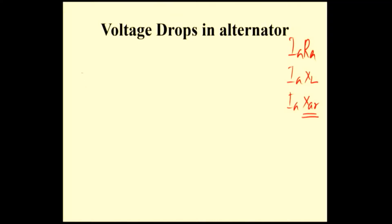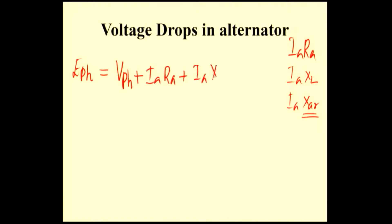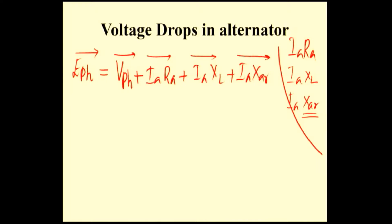Now we can form the voltage equation. That is E_phase — the EMF induced inside the alternator — is equal to V_phase plus IARA plus IAXL plus IAXAR. All are vector quantities, so vector addition must be followed. Here XL is the leakage reactance and XAR is the reactance corresponding to armature reaction.